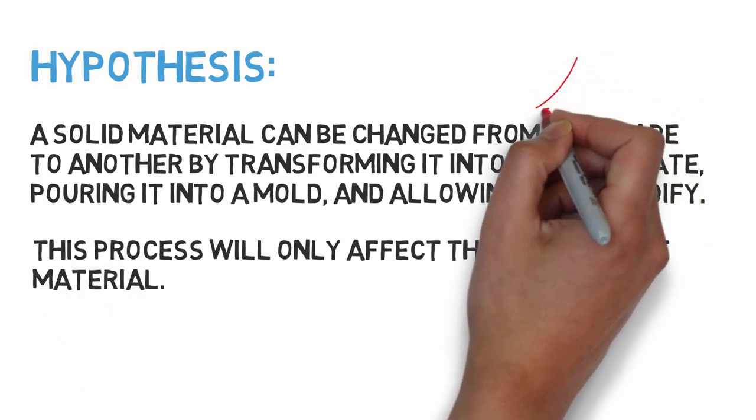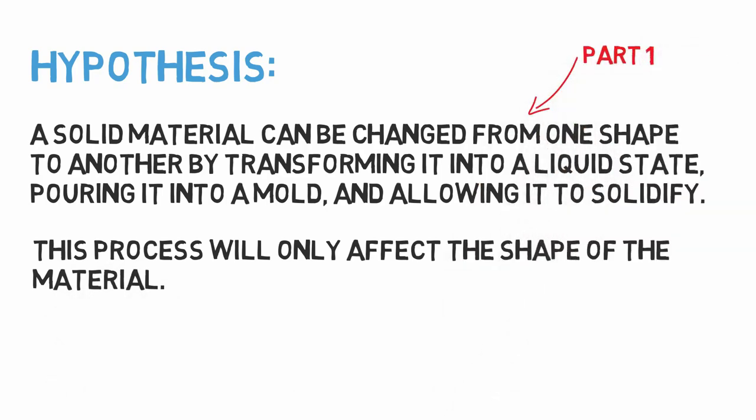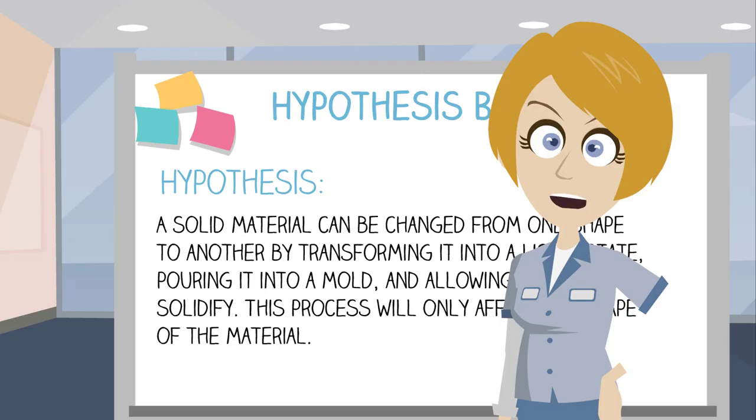As you can see, this hypothesis has two parts: that we can change the shape of the material, and that it changes only the shape. We'll need to be aware of this when designing our experiment, since we will want to look at both parts of this hypothesis.